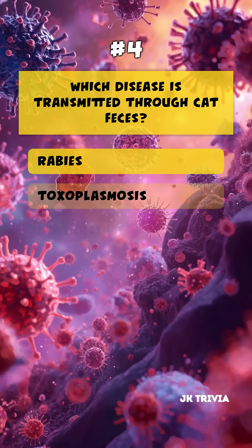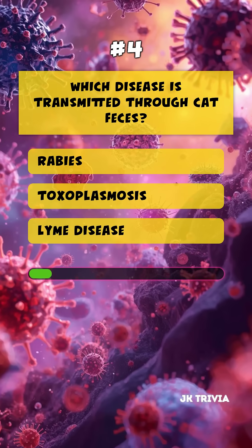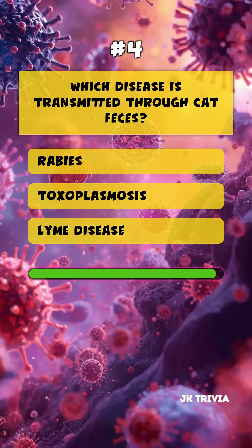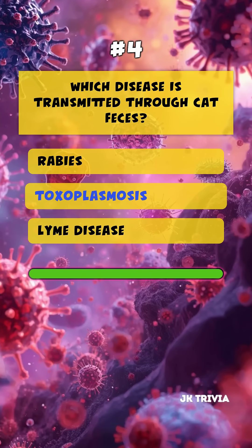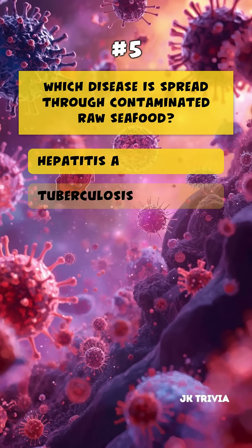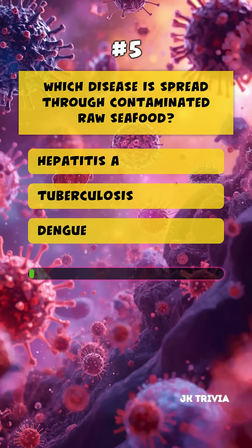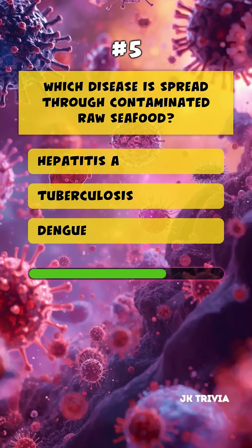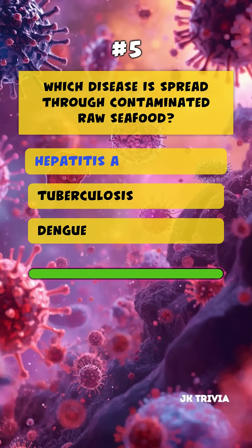Which disease is transmitted through cat feces? Toxoplasmosis. Which disease is spread through contaminated raw seafood? Hepatitis A.